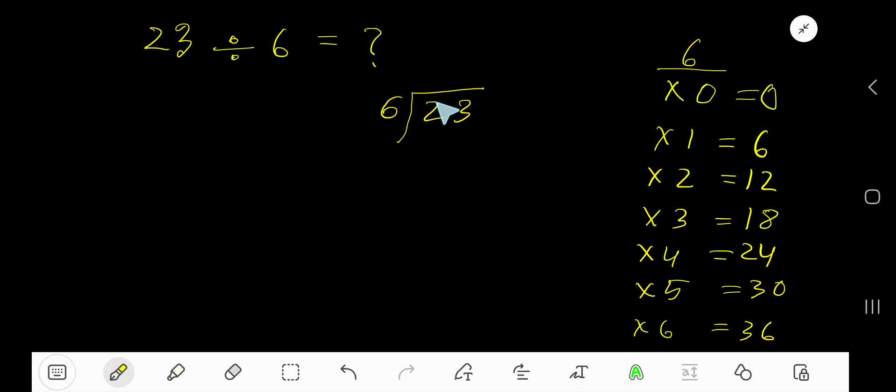6 goes into 2 how many times? Since 2 is less than 6, 0 times. 0 times 6 is 0. Subtract 2, bring down this 3. Now we have 23.